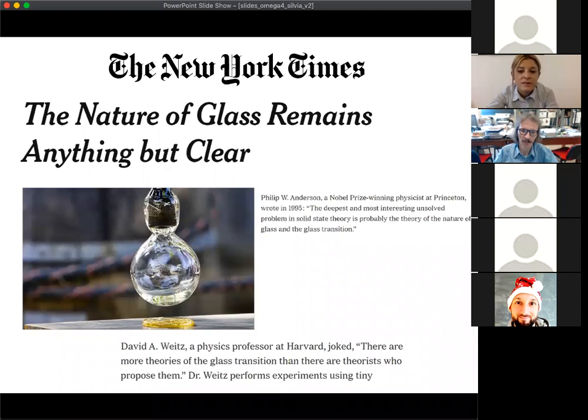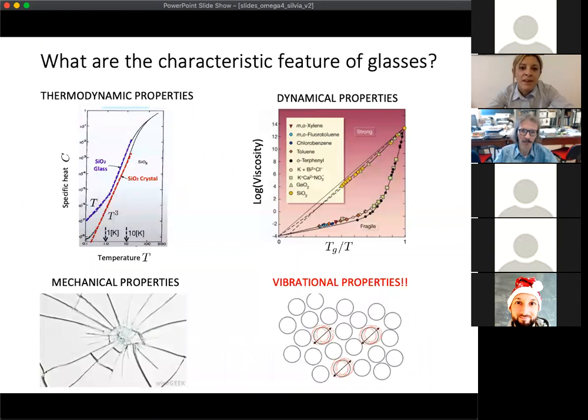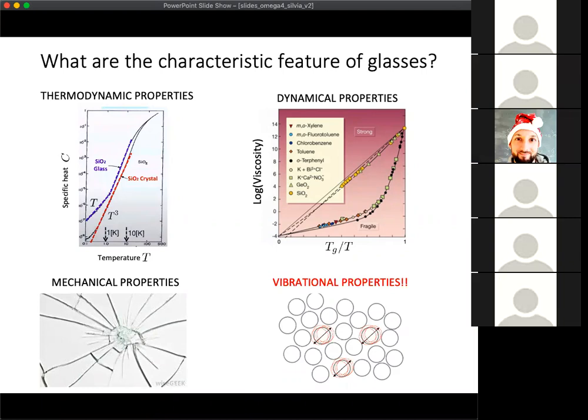I picked up this article from the New York Times of about 20 years ago with a fancy title: 'The nature of glass remains anything but clear.' Philip Anderson, the famous Nobel prize winner, stated that the deepest and most interesting unsolved problem in solid state theory is probably the theory of glasses and the glass transition.